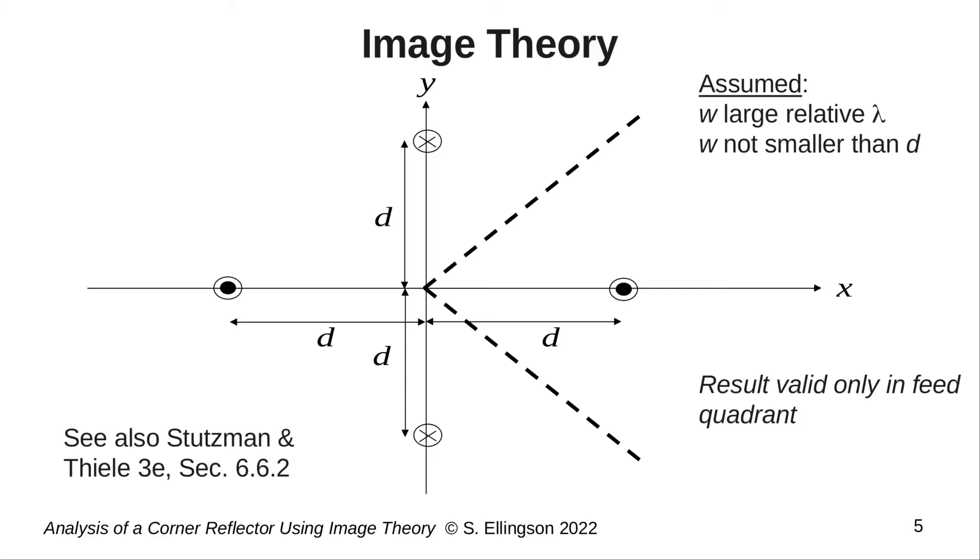Before moving on, I need to make one other important point. Note that the width of the plate, that is, w, has vanished from the problem. This should alert you to a shortcoming of this method of analysis. Clearly, the width of the plates should play some role in the behavior of the scattered fields. In this particular problem, however, it turns out that the value of w does not make much difference as long as w is large compared to a wavelength and w is not smaller than D.